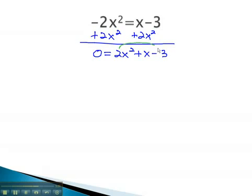Using the AC method to factor, we want to multiply to negative 6 and add to 1. This would be 2 times 3, where the 2 is a negative. Using this to factor, the only way we can get the 2x squared is by multiplying 2x times x.